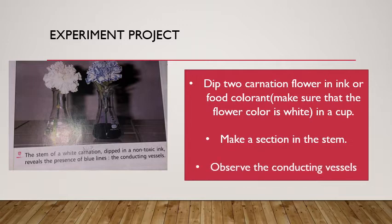When you make a section in the stem, make sure to observe the conducting vessels — you can see them. To summarize: place two cups — in the first, put water and dip a white flower; in the second, put ink or food colorant and dip another white flower. Make sure no roots are present, and observe the conducting vessels in the stem section.